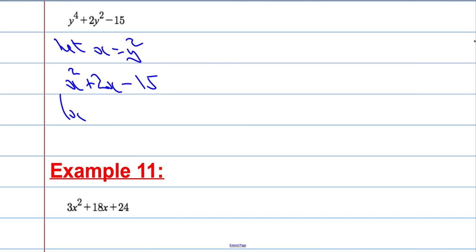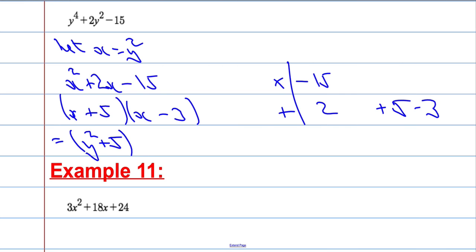So x and x, and then factors of minus, so two numbers that multiply to make minus 15, but add to make 2. A little bit of thought. I'm thinking of a 5 and a 3. We want a positive 2, so plus 5 and minus 3. Plus 5 and minus 3. And we've almost factorised. Remember, x equals y squared. So that is going to break down to be y squared plus 5 times y squared minus 3.